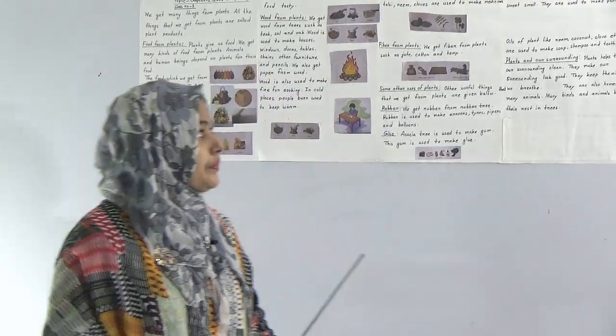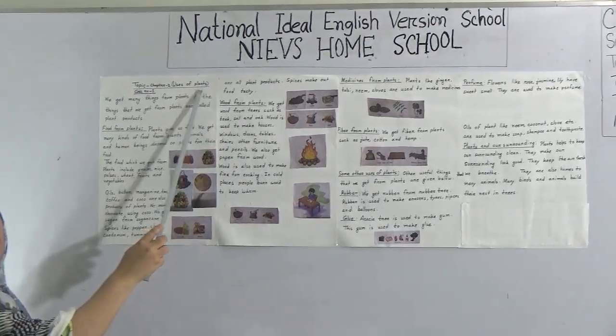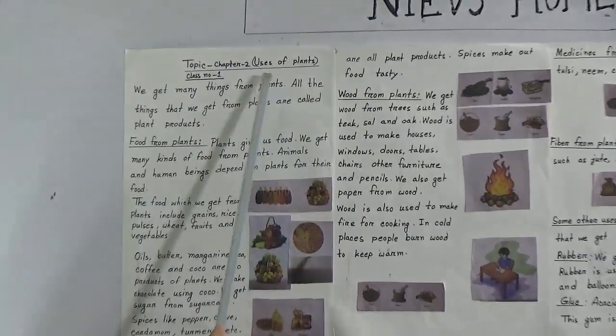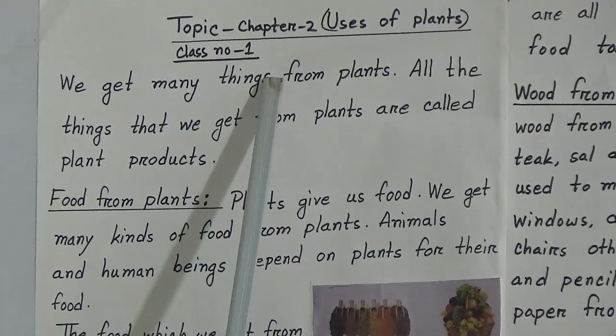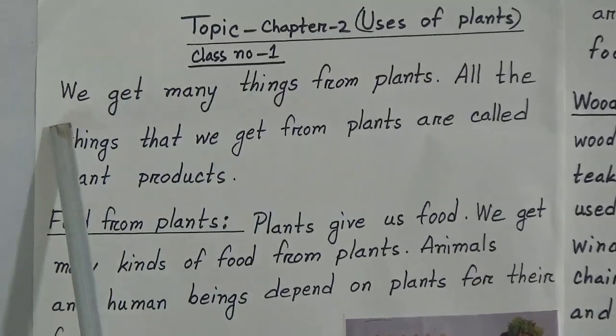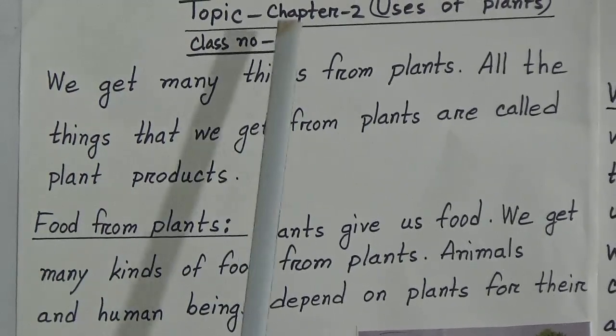Today I am going to take a general science class for Class 2 students. Dear students, our topic is 'Uses of Plants.' This is our first class of our annual exam, so let's start today's topic. This is Chapter 2 in your book.